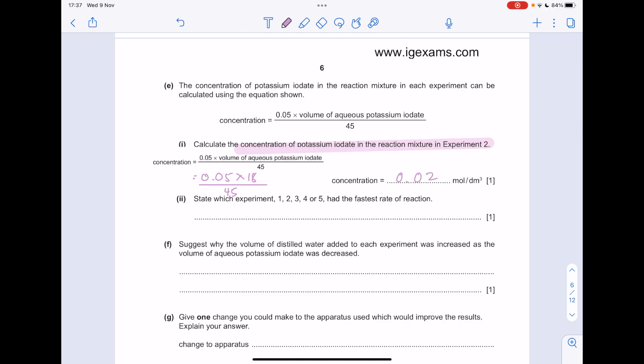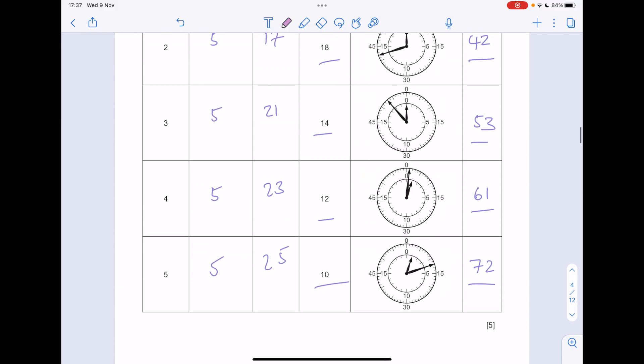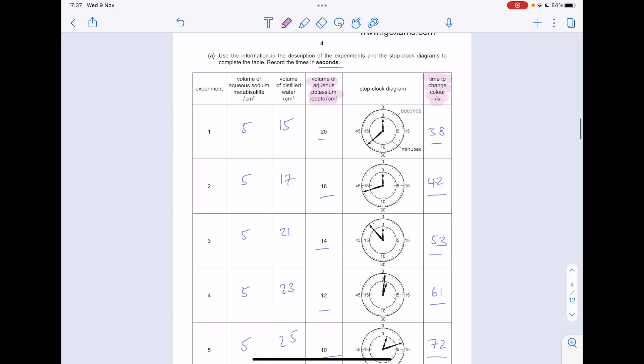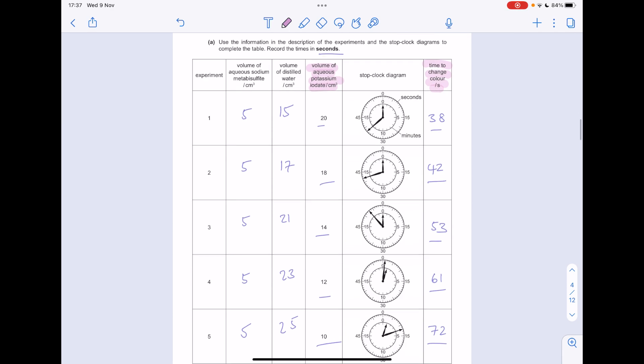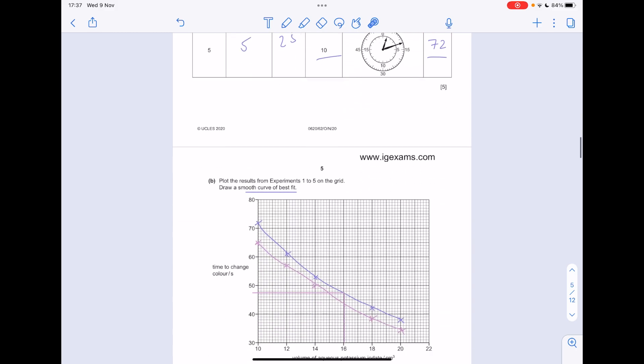State which experiment 1, 2, 3, 4, 5 had the fastest rate of reaction. It's the one where the time for the colour to change was the shortest, which means it's this one at 38 seconds. So that's experiment 1.